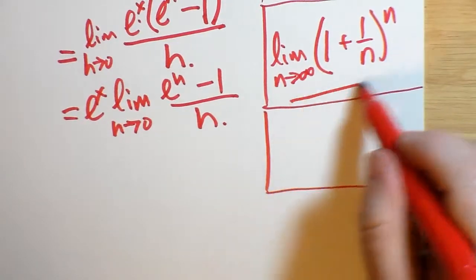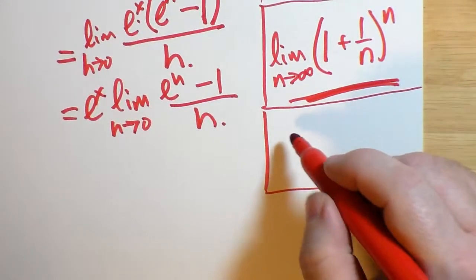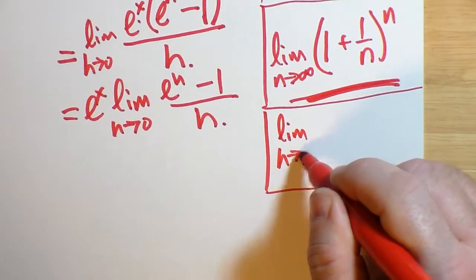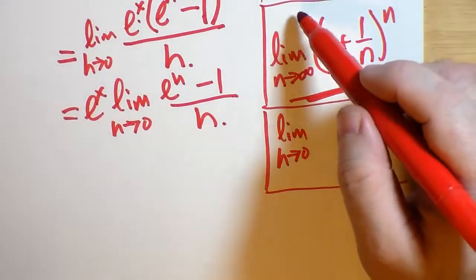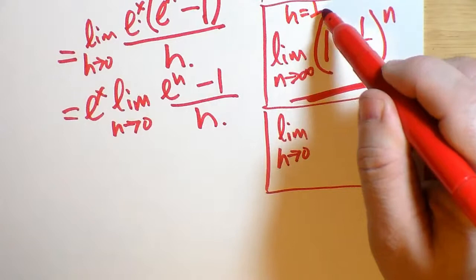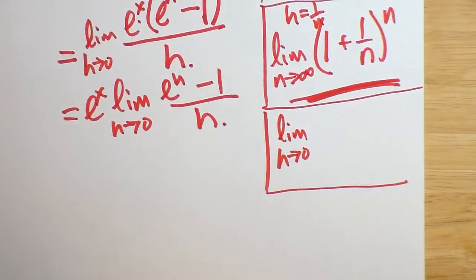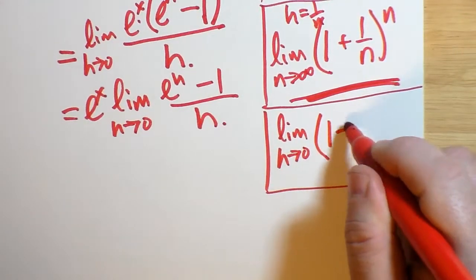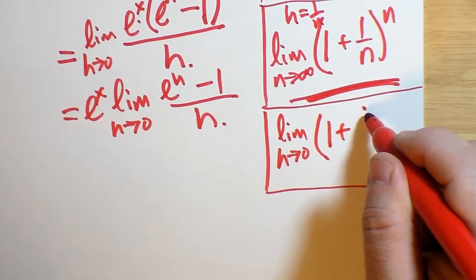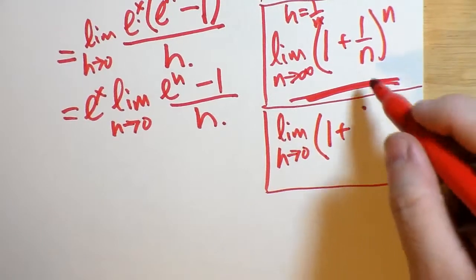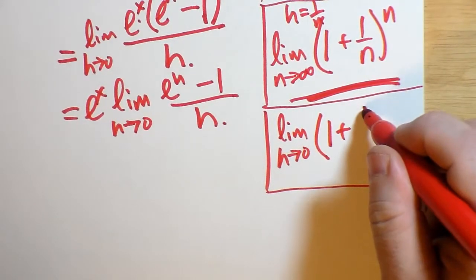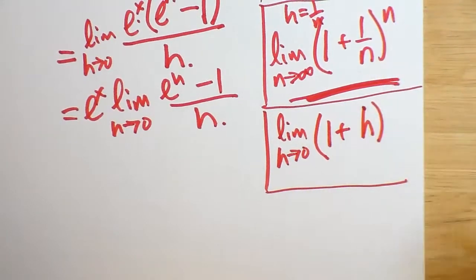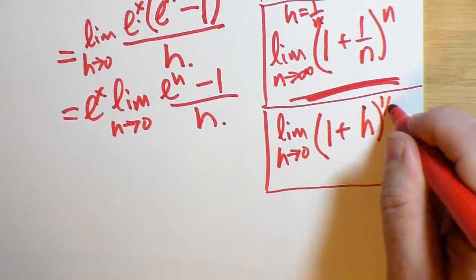If we now rewrite this limit here as being the limit as h approaches 0, and we're allowing that h equals 1 over n, or if you like n equals 1 over h, that they're just reciprocals of each other, then that means 1 plus 1 over 1 over h, because that's what n is now, is just equal to h. 1 plus h to the power of n, which can now be replaced with 1 over h.